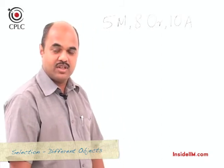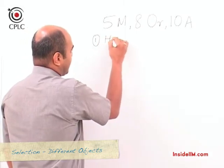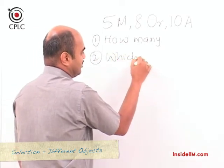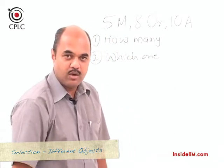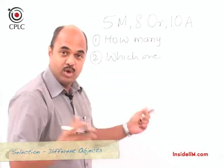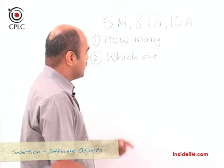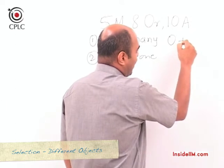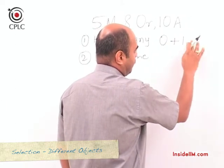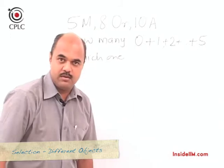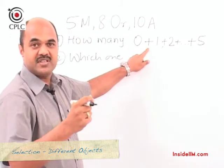But the question is: in how many ways can mangoes be selected? We haven't specified how many mangoes, and hence there are two parts to this question. The first part is how many mangoes, and the second part is which ones? So we can have 0 mangoes selected — not selecting anything is also a way of selection — or 1, 2, and in this manner up to 5 mangoes. The plus here represents 'or'.